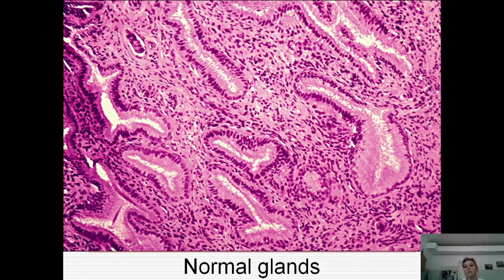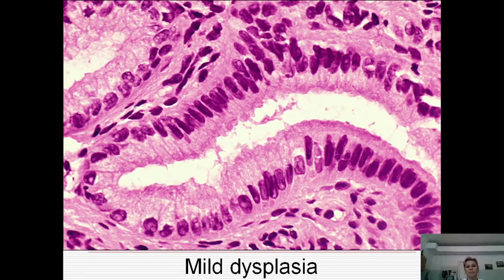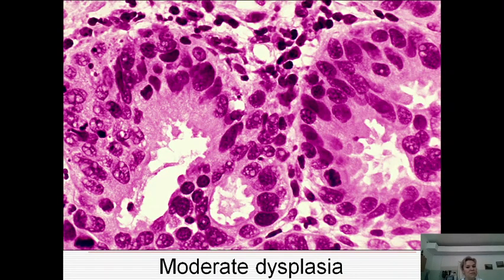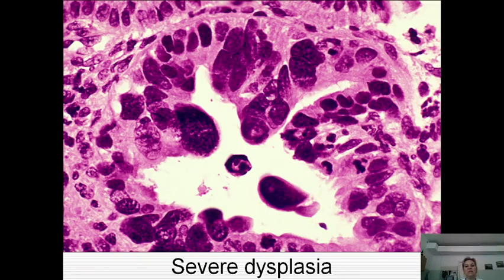In this photo you can see normal glands of the stomach, mild dysplasia — showing different forms of nuclei but mild changes — and moderate dysplasia showing different forms and sizes of nuclei in the cells, but more serious. Severe dysplasia represents pre-cancerous cells.